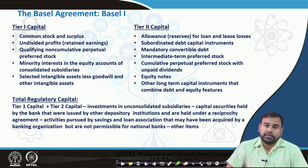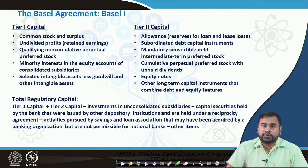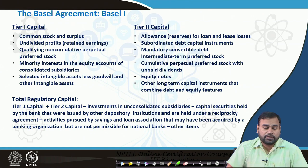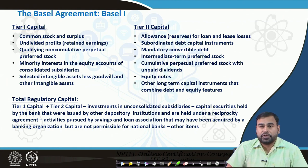In summary, retained earnings and equity mostly come under tier 1 capital, and debt components mostly come under tier 2 capital. These are the basic differences between tier 1 and tier 2 capital of commercial banks as per Basel 1.